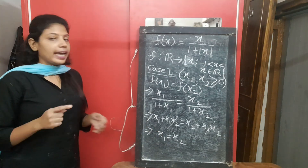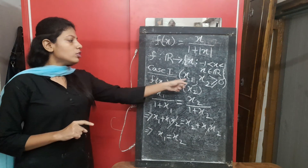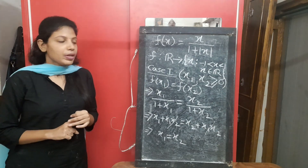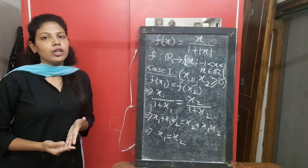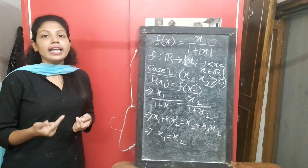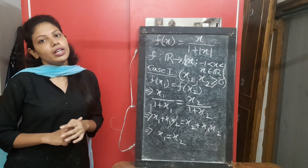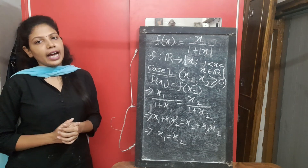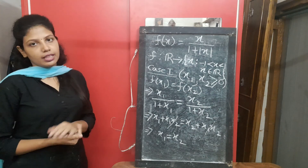Case 2: both x1 and x2 less than 0 — do similarly. Case 3: take one positive and one negative. Cases 2 and 3 you will finish yourself when you submit the copy, and I will check. Please finish this sum yourself.